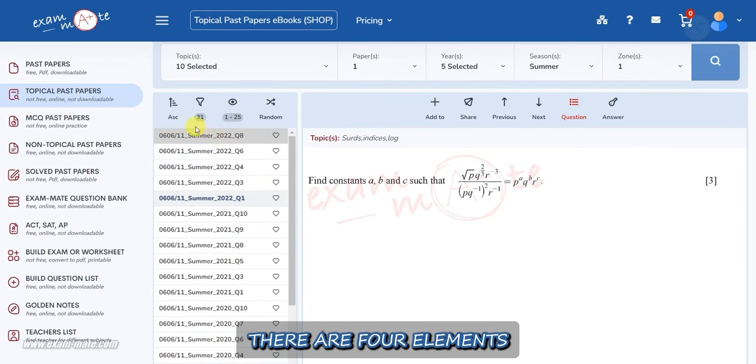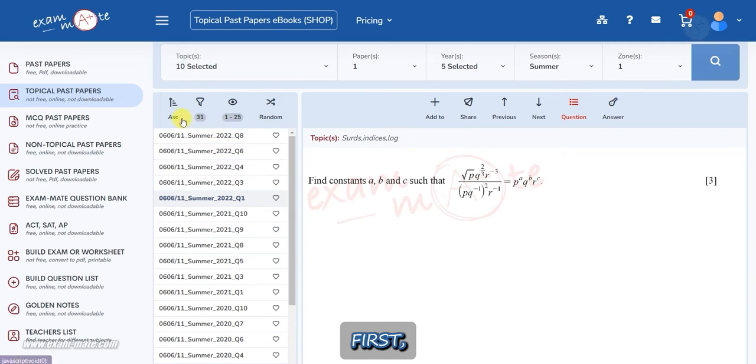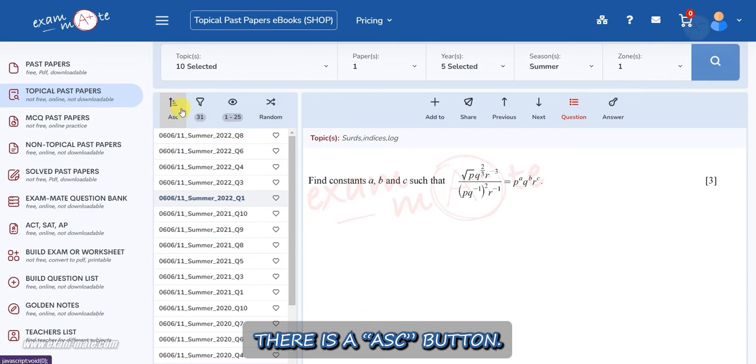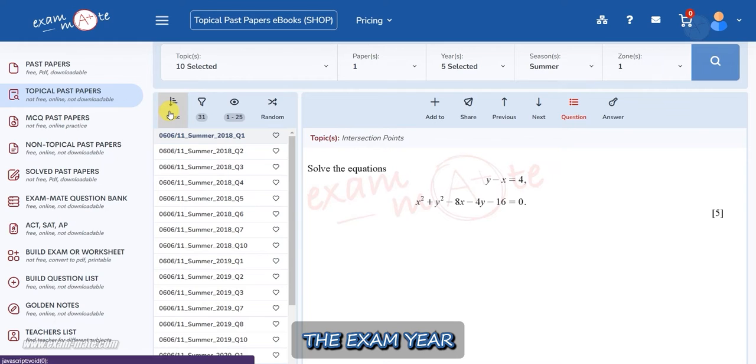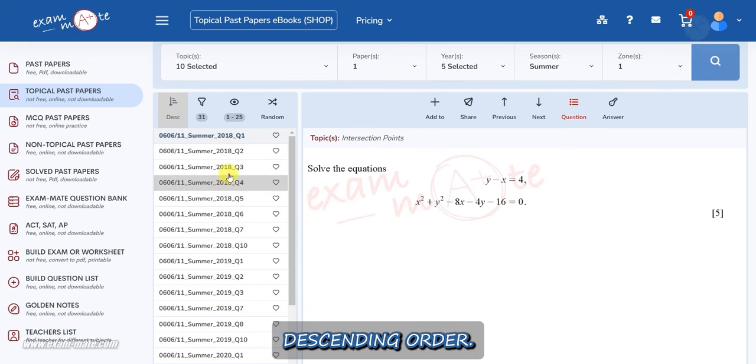There are four elements at the top of the left window. First, there is an AASC button. By clicking on this button, you can arrange your questions according to the exam year in ascending or descending order.